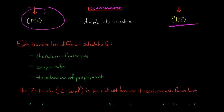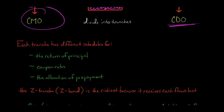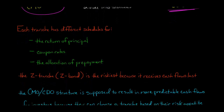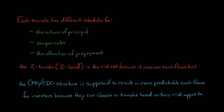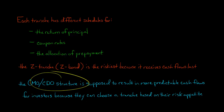The Z tranche is also called the Z bond. That's the one where you've got the biggest risk but also the potential biggest reward. But if you're getting the cash flows last and there's a bunch of defaults — people aren't paying their credit cards or their mortgages — those are the investors that are going to get hit the hardest. This CMO and CDO structure of slicing and dicing up mortgage-backed securities and asset-backed securities, in theory, is supposed to result in more predictable cash flows for investors.